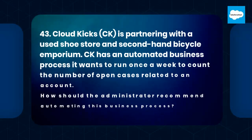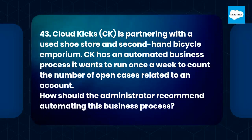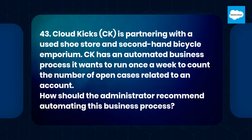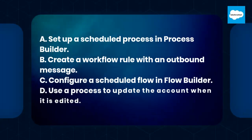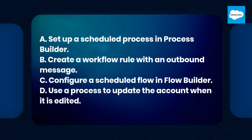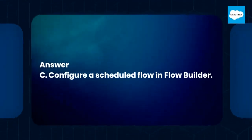Question 43: CloudKicks (CK) is partnering with a used shoe store and second-hand bicycle emporium. CK has an automated business process it wants to run once a week to count the number of open cases related to an account. How should the administrator recommend automating this business process? A. Set up a scheduled process in Process Builder. B. Create a workflow rule with an outbound message. C. Configure a scheduled flow in Flow Builder. D. Use a process to update the account when it is edited. Answer: C. Configure a scheduled flow in Flow Builder.